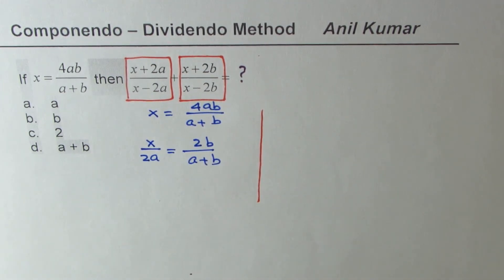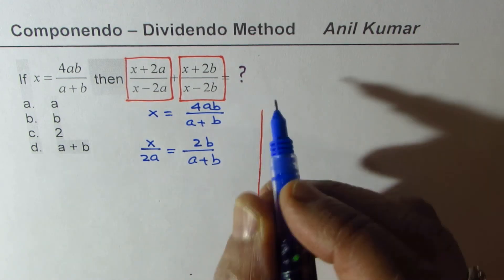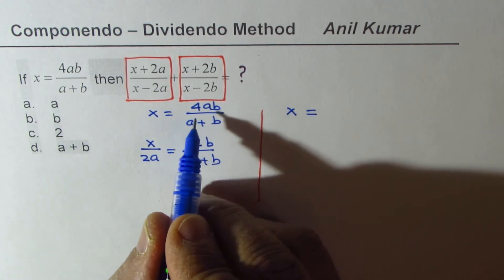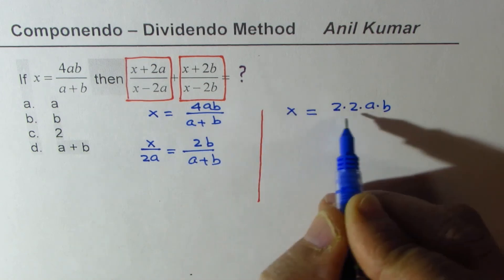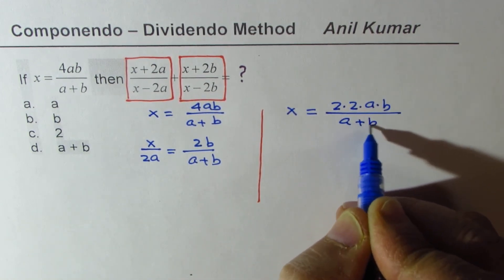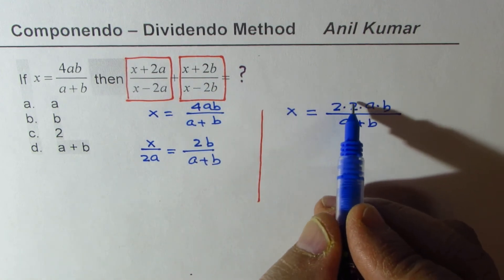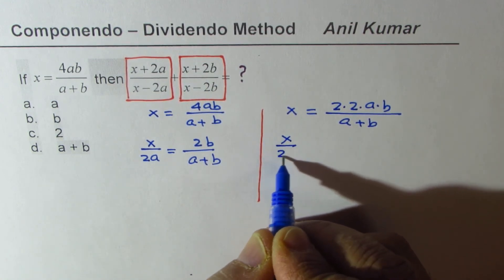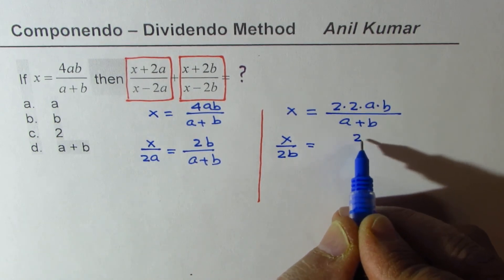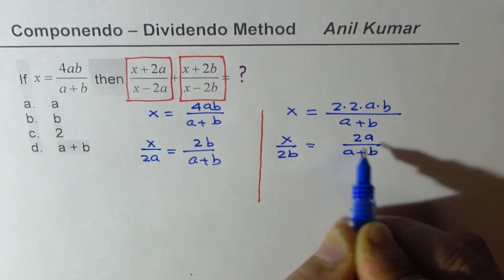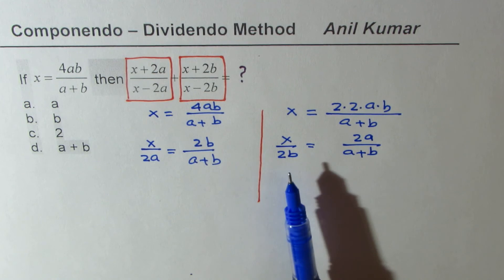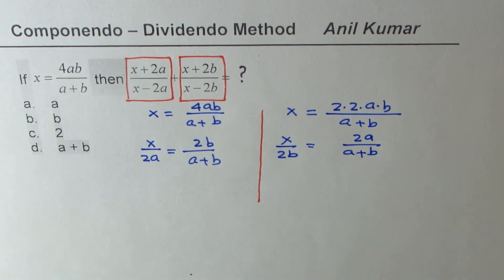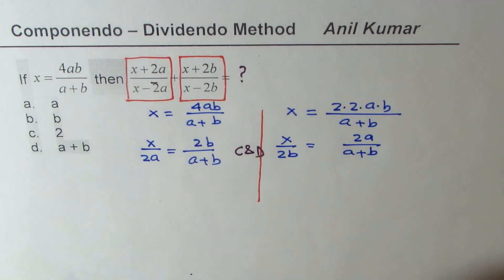For the second part, I rewrite 4ab as 2 times 2 times a times b over (a plus b). Since I want b, I write x over 2b equals 2a over (a plus b). So I now have 2a and 2b in the denominators of the two separate expressions. By applying componendo and dividendo, I can get each of the two expressions separately.